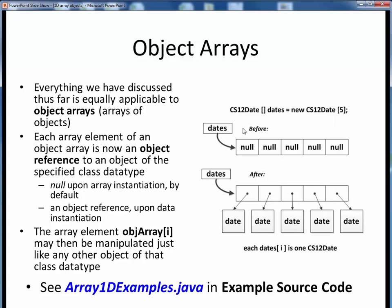As usual, we wind up with this array reference pointing to the actual array elsewhere in memory, where all five array elements are initialized to null by default. Then once we get around to actually initializing these array elements, each one of them will point to some actual CS12 date object, yet elsewhere in memory.